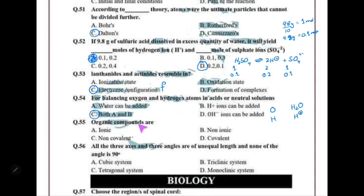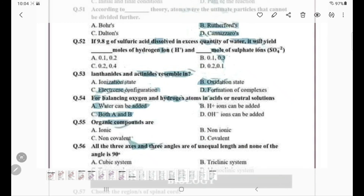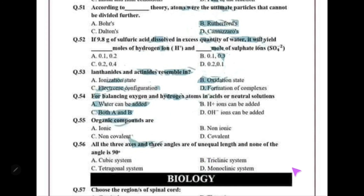Organic compounds are covalent in nature. A crystal system where all three axes and all three angles are unequal in length and none of the angles is 90 degrees is the triclinic system. In the triclinic system, a ≠ b ≠ c and α ≠ β ≠ γ, and none are equal to 90 degrees. That's all about test 7 — wishing you all the best.